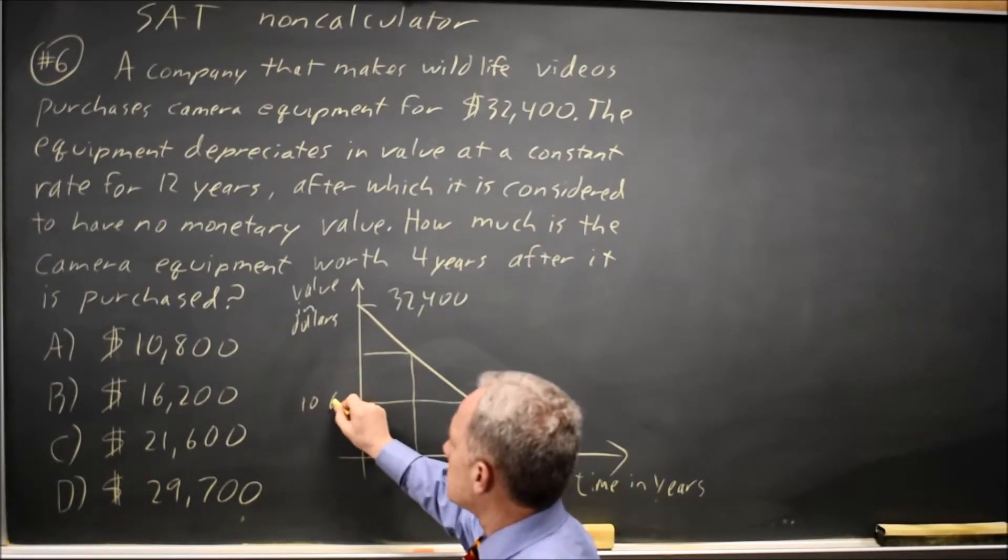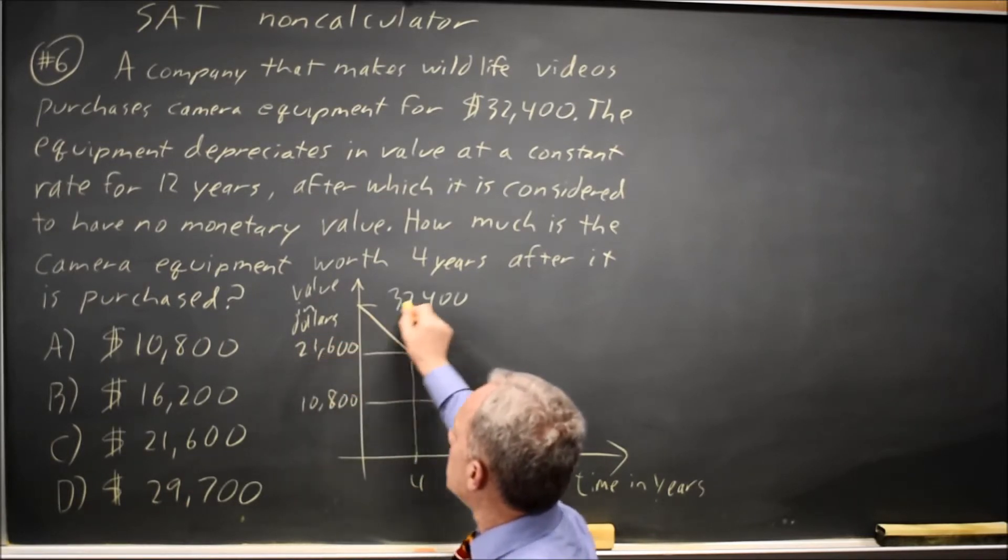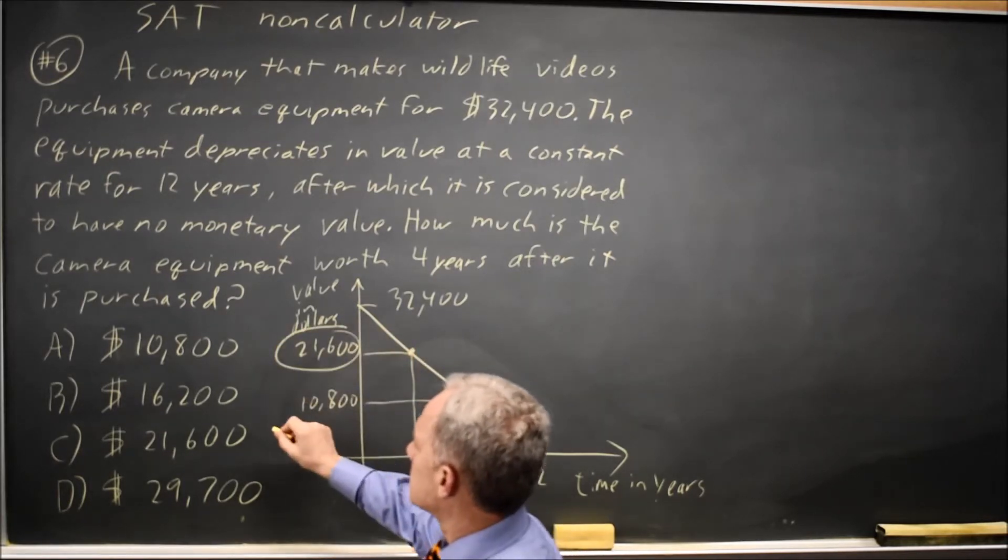So this is $10,800, and this is $21,600, and $32,400. So the value at four years would be $21,600.